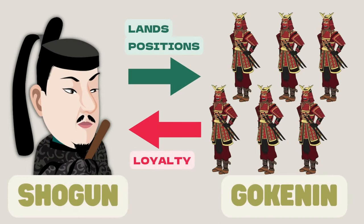What characterizes the Kamakura shogunate is the strong ties between the shogun and the samurai. Samurai who follow the shogun are called Gokenin. The shogun appointed them as Shugo or Jito and protected their lands. The Gokenin swore loyalty to the shogun and led their families to fight for him.